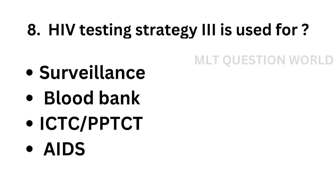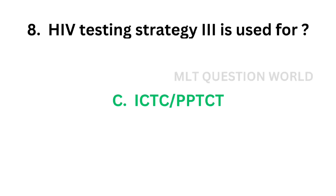Question number 8: HIV testing strategy 3 is used for — option A, surveillance; option B, blood bank; option C, ICTC or PPTCT; option D, AIDS. The correct answer is option C, ICTC or PPTCT. HIV testing strategy 3 is used for asymptomatic patients.